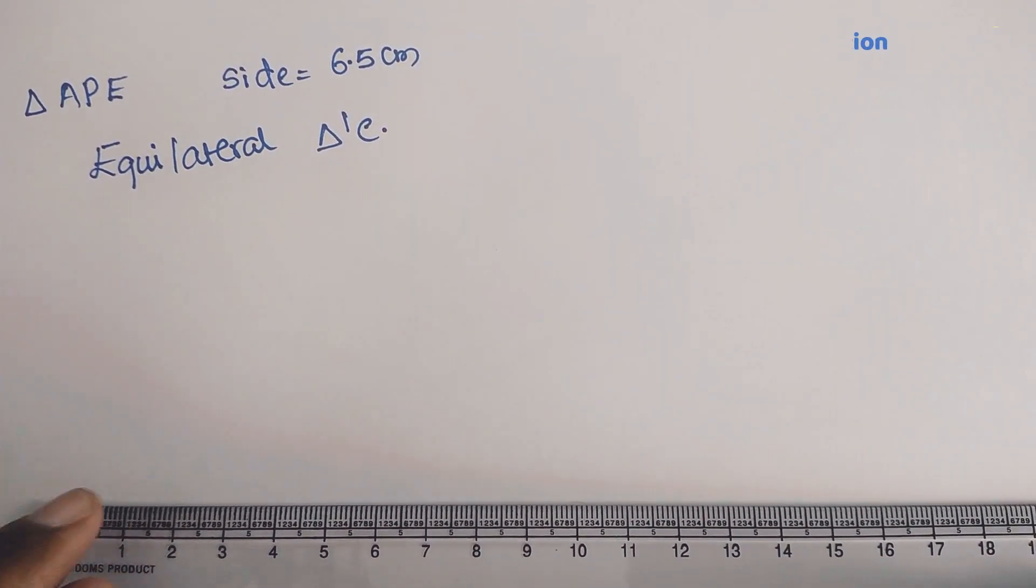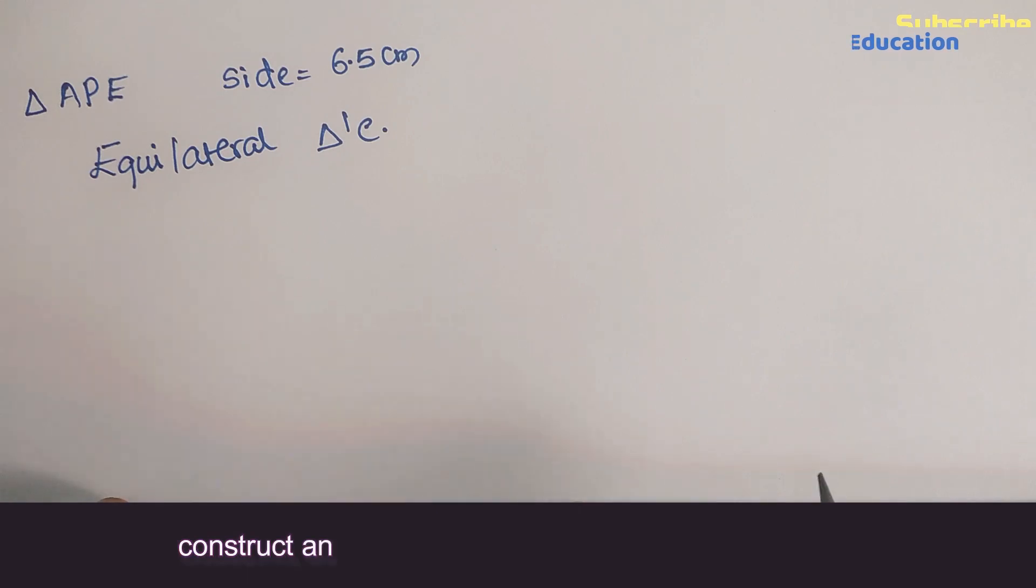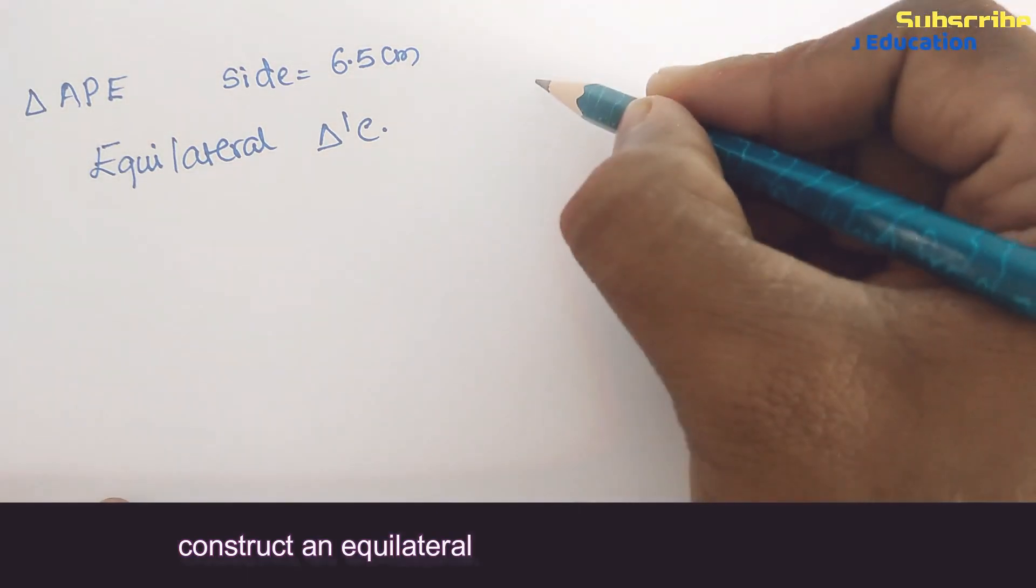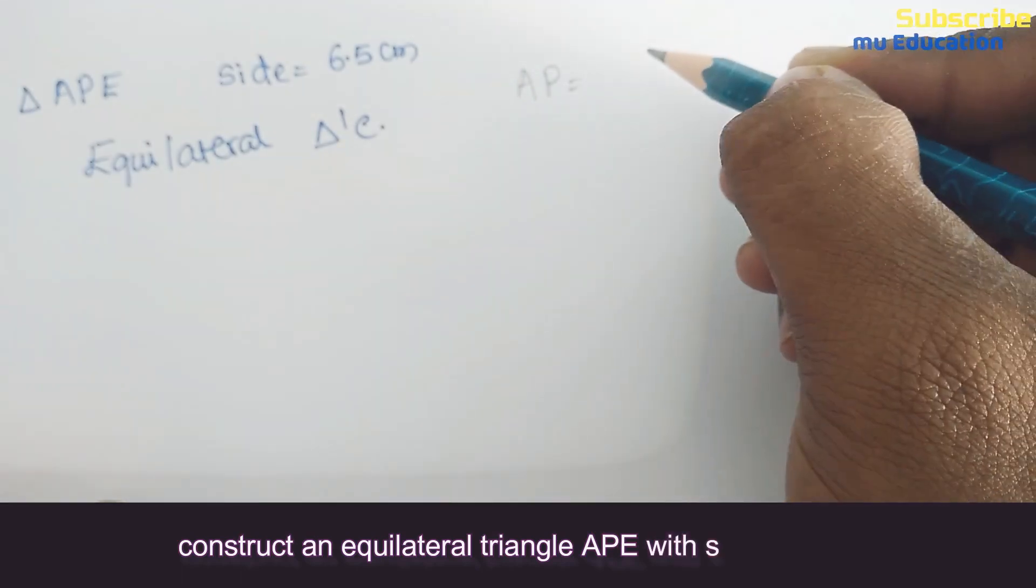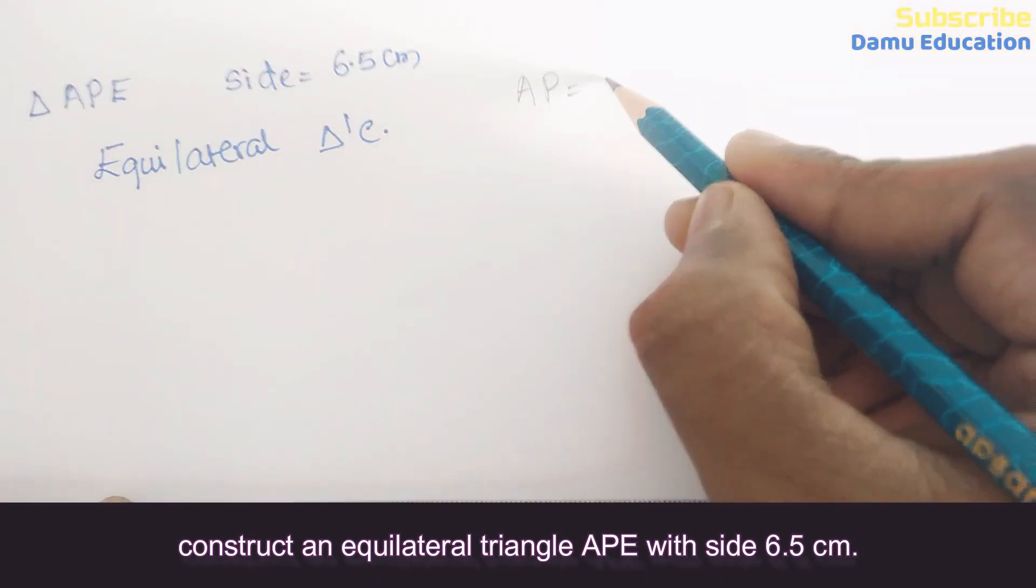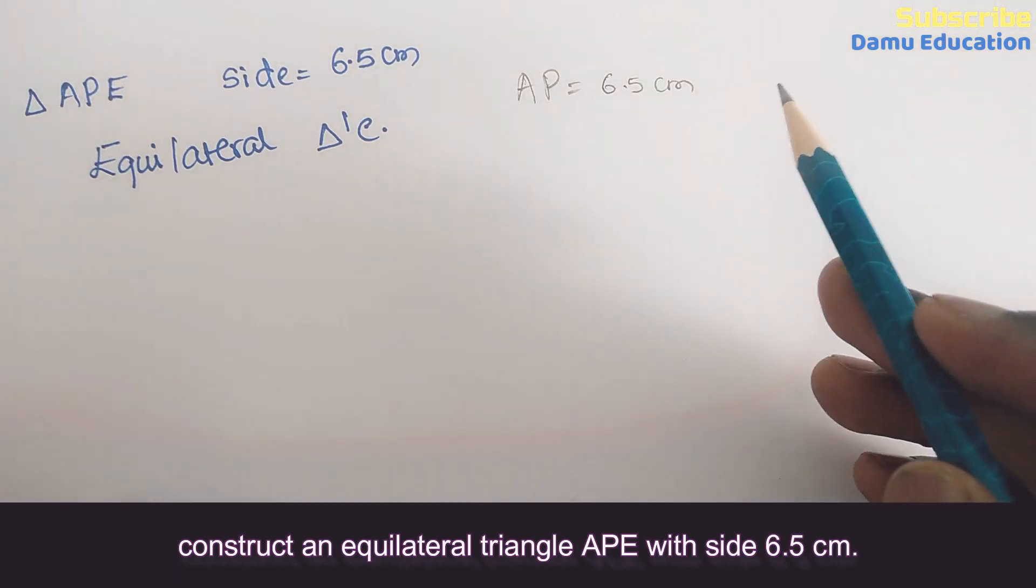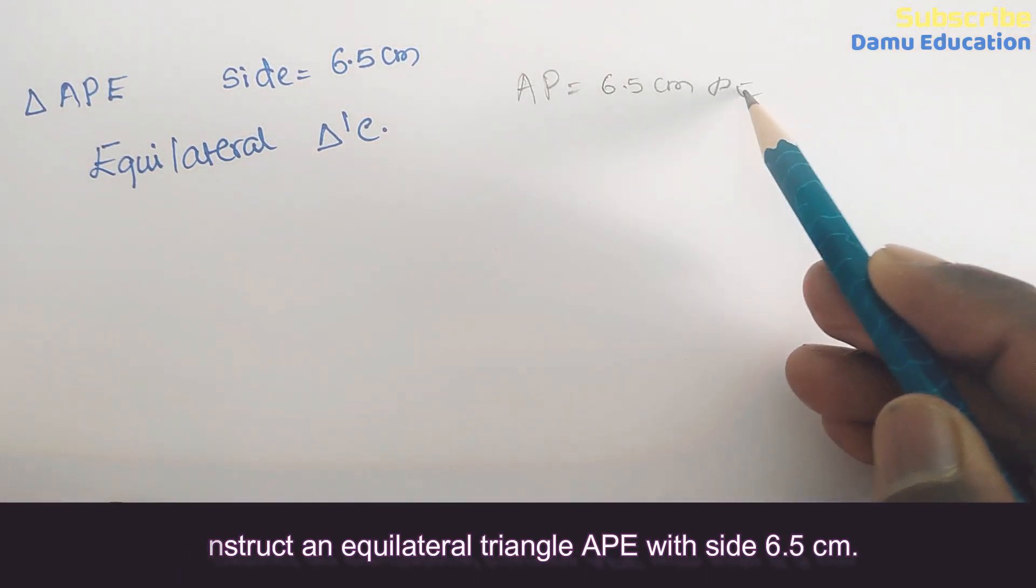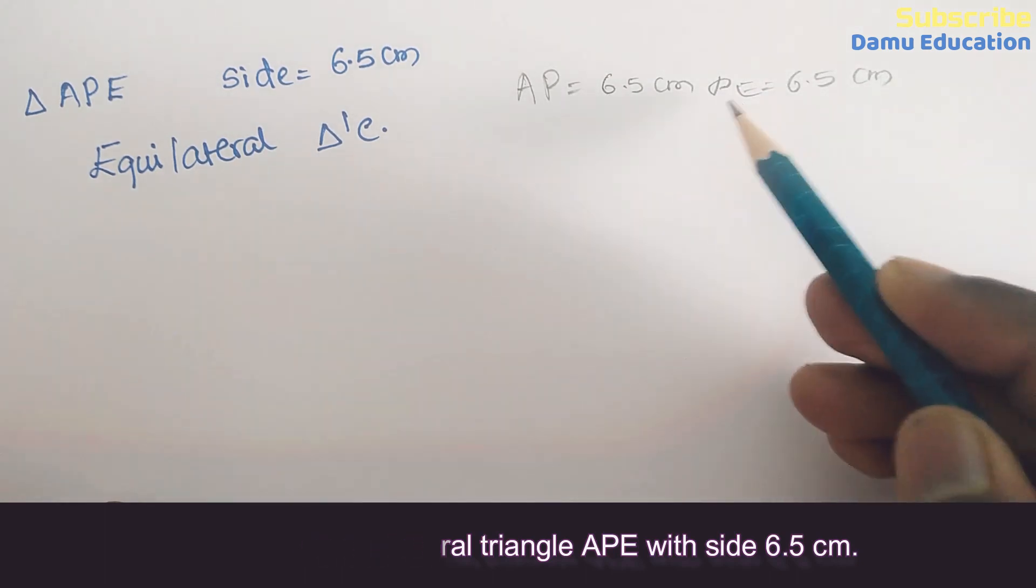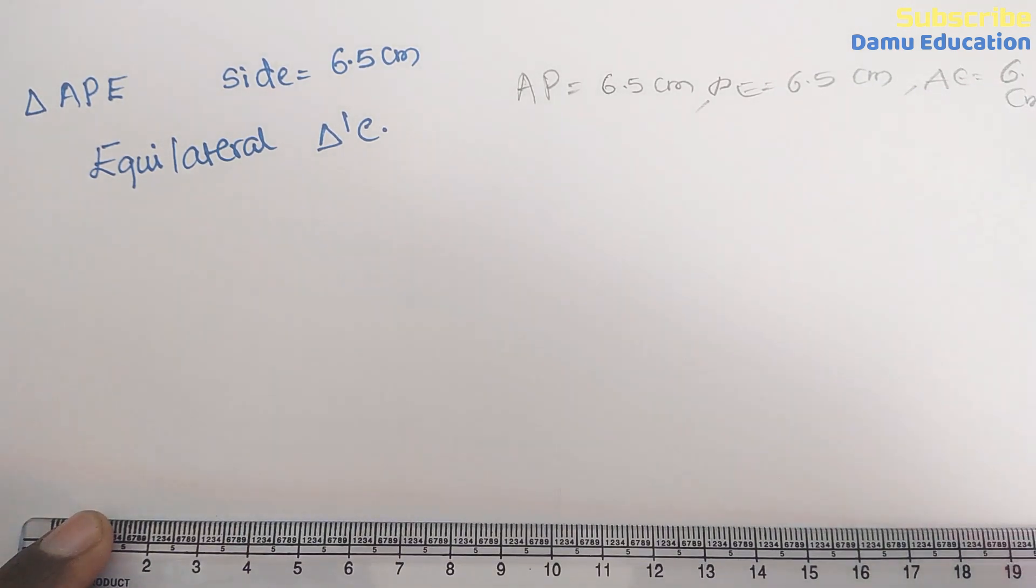In this question we are going to discuss how to construct an equilateral triangle with side 6.5 centimeter. Let's take what are the sides: AP will be equal to 6.5 centimeter, PE equal to 6.5 centimeter, then AE equals to 6.5 centimeter.